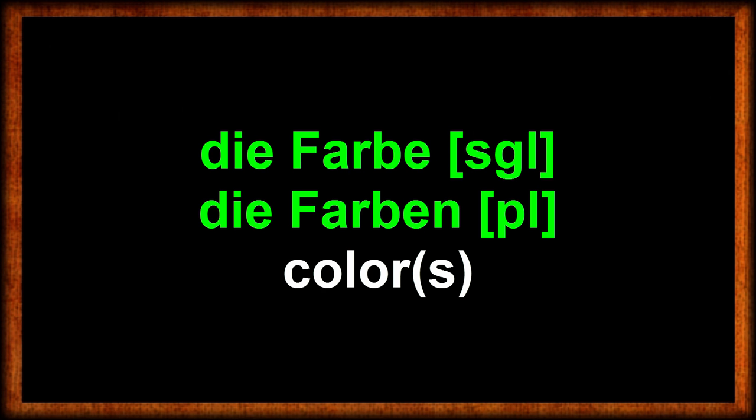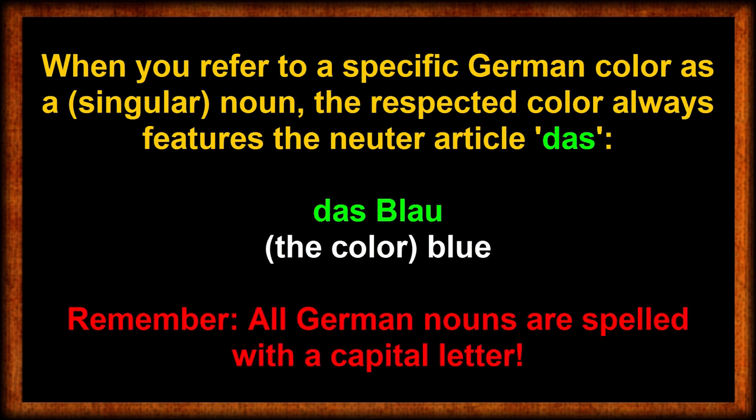The color is die Farbe, singular, die Farben, plural. When you refer to color as a noun you always use the neuter article das — das Rot, das Blau, etc.